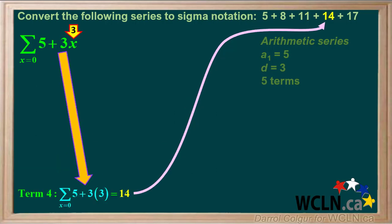For term 4, we'll put in 3 for x and we get 14 as a value for term 4. If you were to put in 4 for x, you can see you would get 17 as a value for term 5.